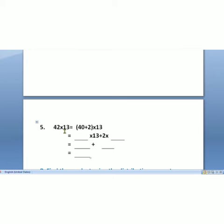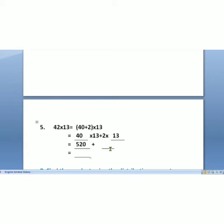The next one is 42 into 13. In these numbers, 42 is the bigger number and 13 is the smaller number. We write 42 in simpler numbers: 40 plus 2, into 13. We multiply: 40 into 13, plus 2 into 13. 40 into 13 is equal to 520, and 2 into 13 is 26. So, 520 plus 26 is equal to 546.